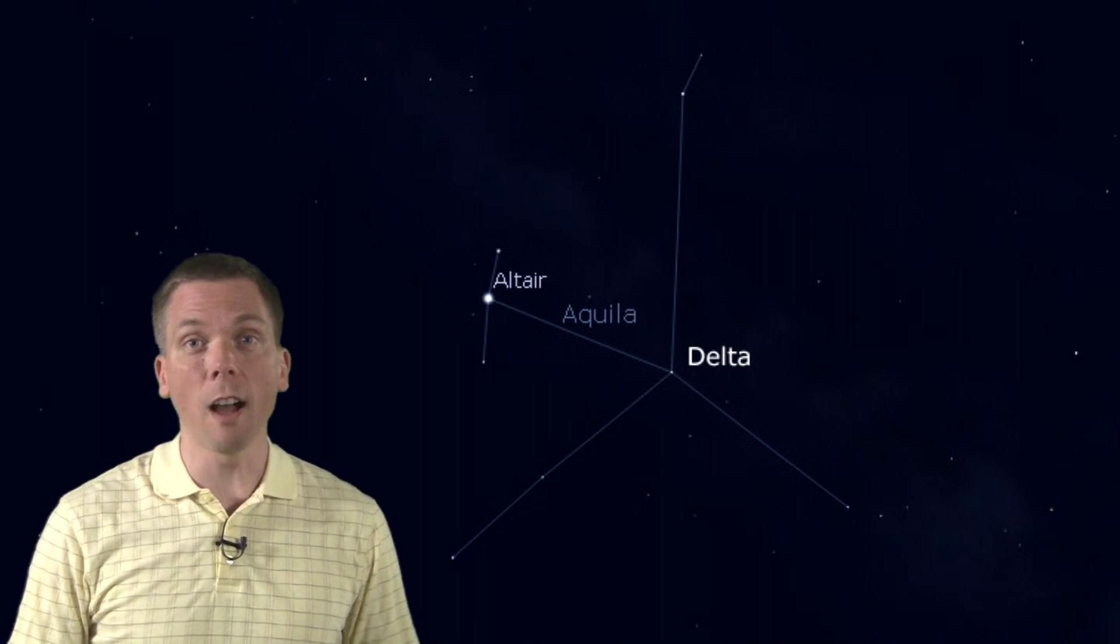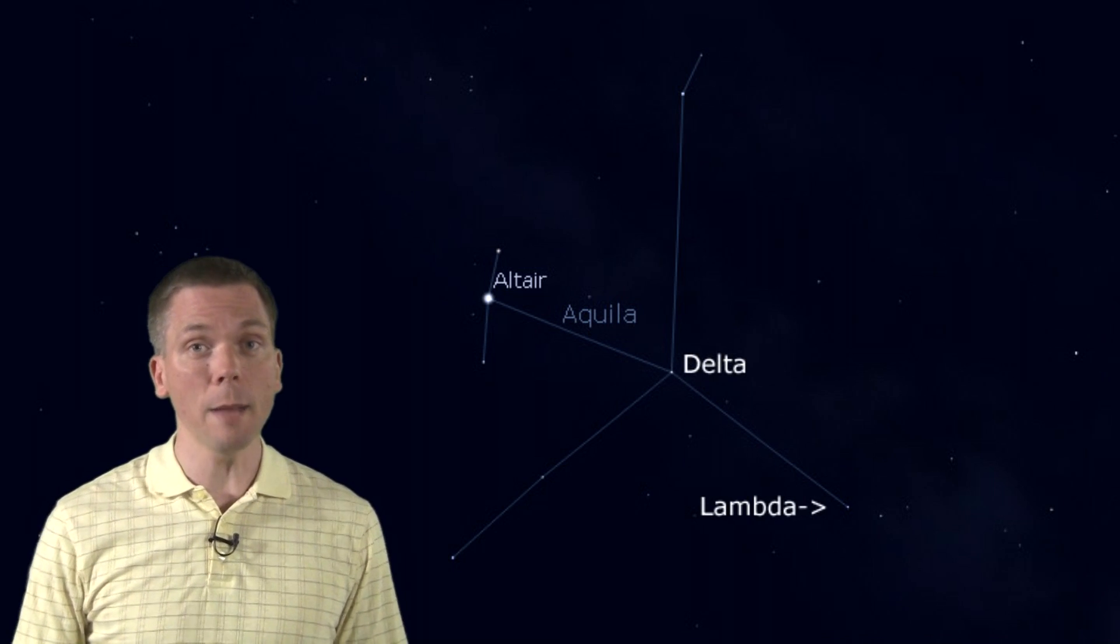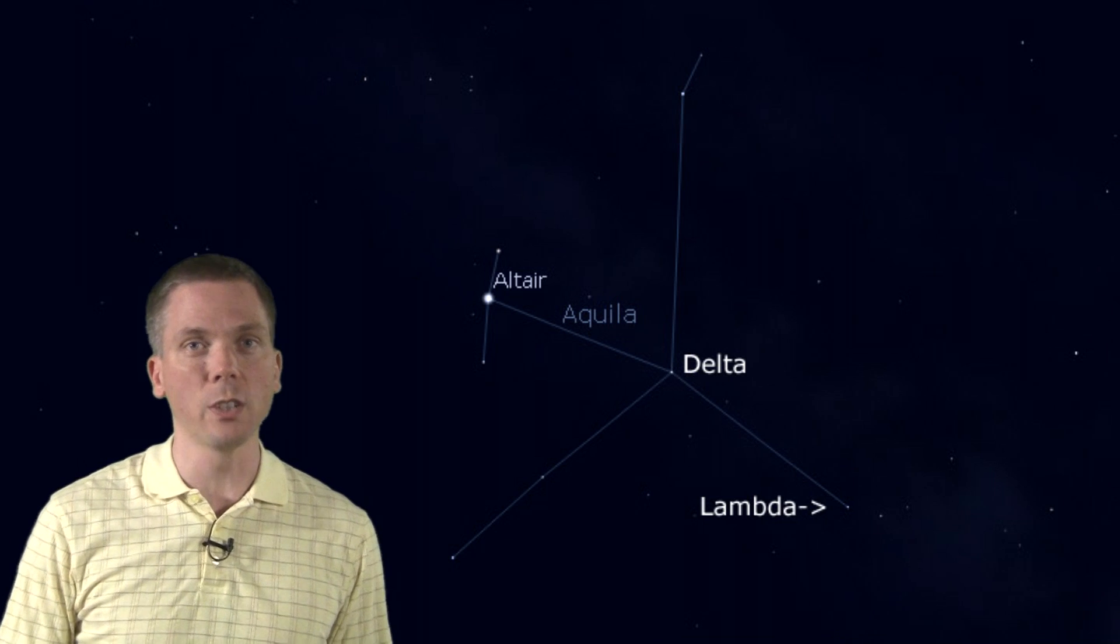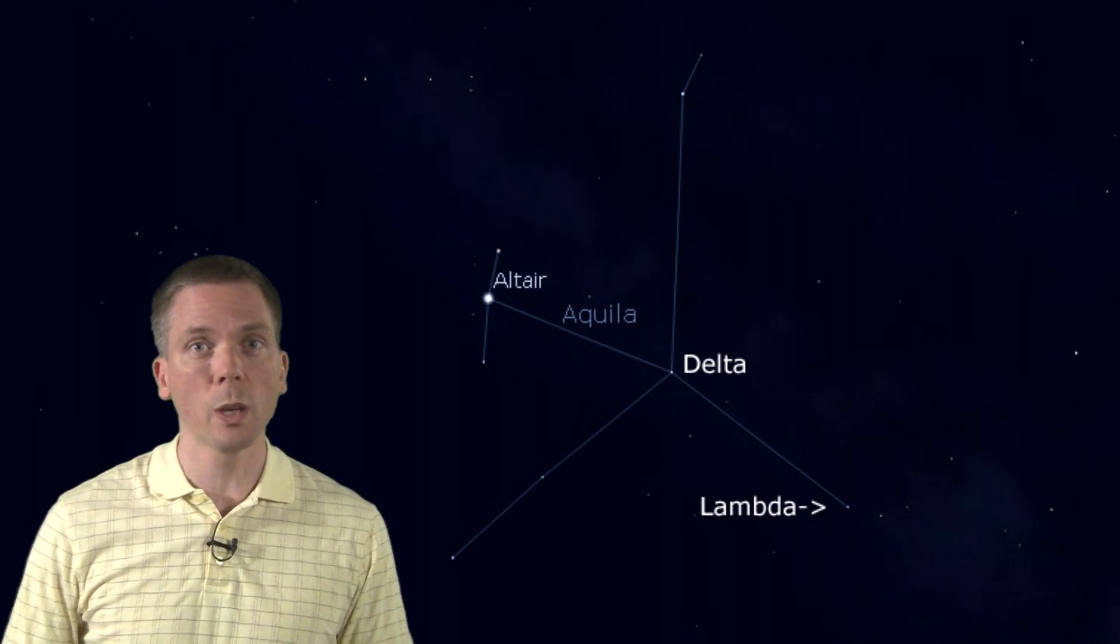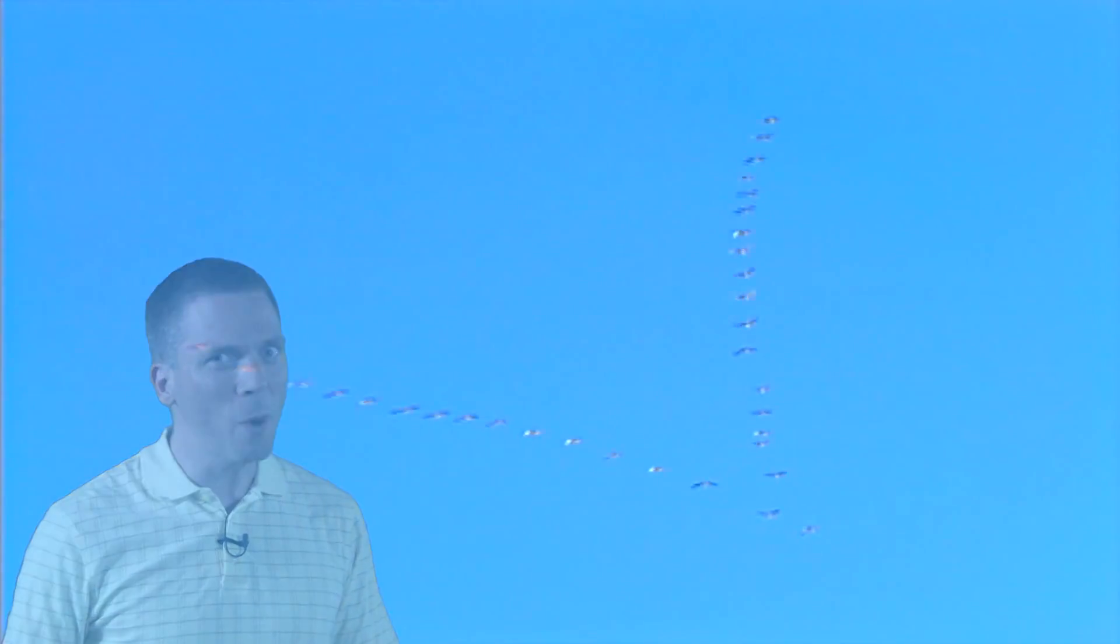About the same distance, on a nearly similar line, is lambda, another 3.4 magnitude star. From here, in the eagle, we are oh so close to some wild ducks. Huh? What's that, you ask? More in a moment.